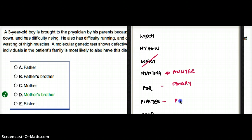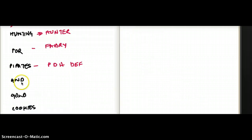Pirates, pyruvate dehydrogenase deficiency. And then pirates, and there's really nothing for and. Gold is going to be for G6PD. And cookies is going to be CGD. So what is it again?